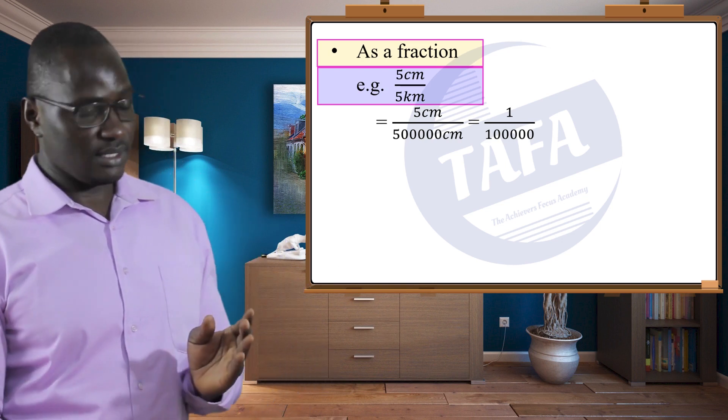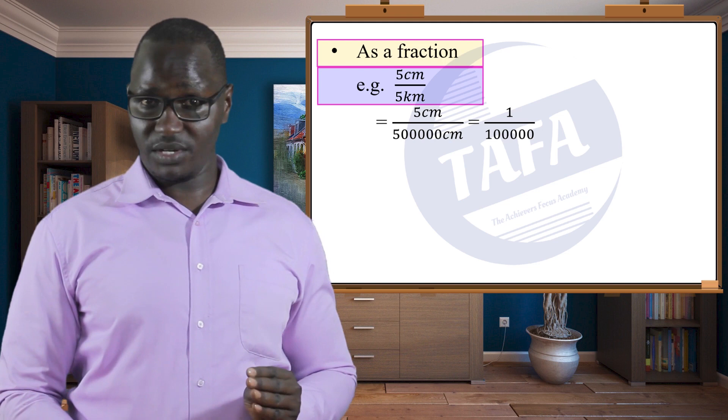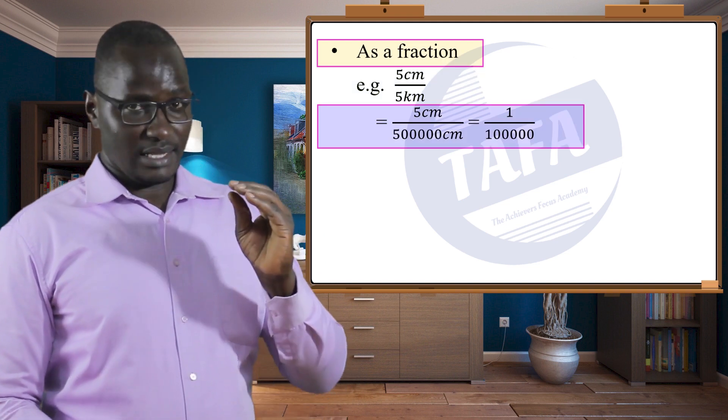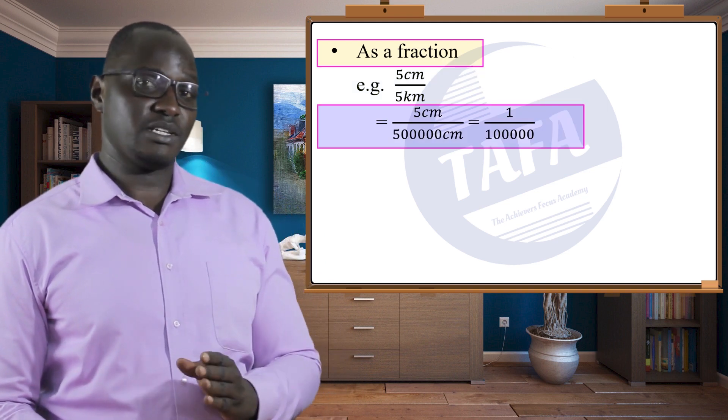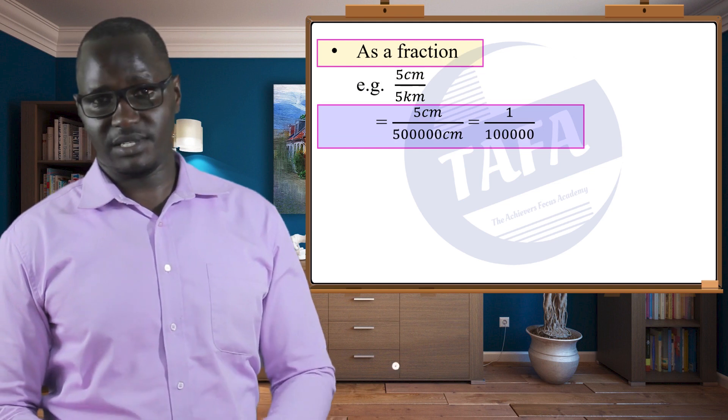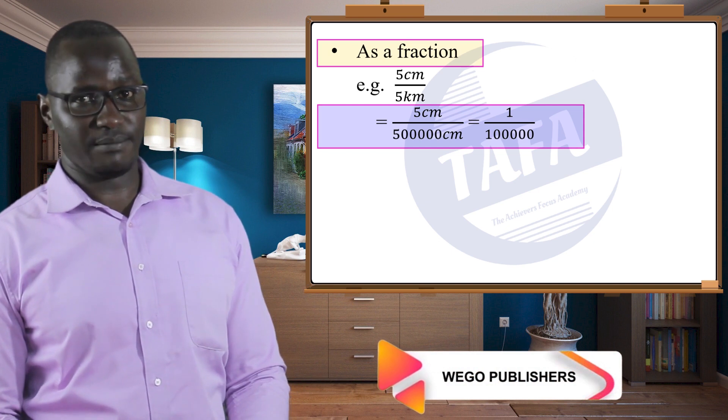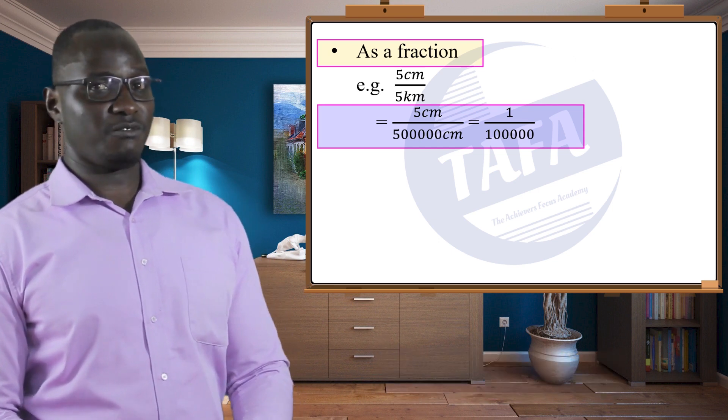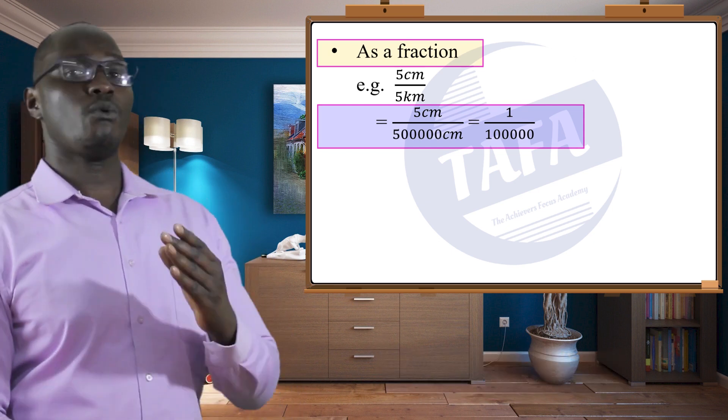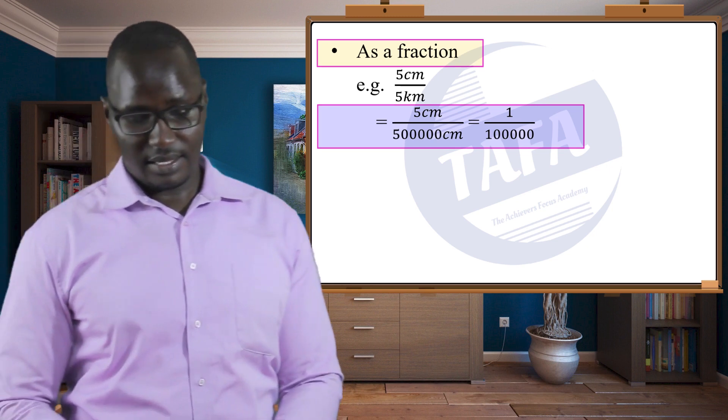That means the kilometers we have to convert to centimeters, so we'll have five over five hundred thousand centimeters. If we simplify, we will have one over one hundred thousand.